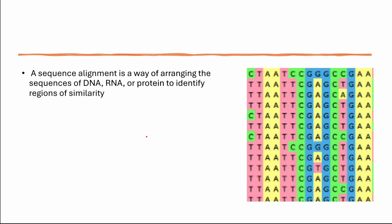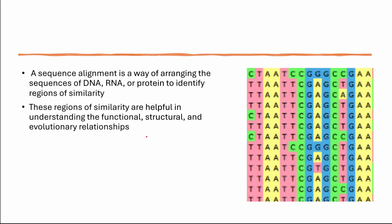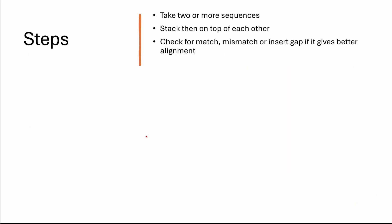Sequence alignment arranges two or more nucleotide or amino acid sequences to identify regions of similarity between the sequences. These regions of similarity are helpful in understanding the functional, structural, and evolutionary relationships between the sequences. The first step is usually to take two or more sequences and stack them on top of each other.